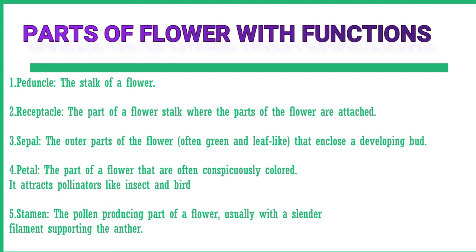Petal: the part of a flower that is often conspicuously colored. It attracts pollinators like insects and birds. Stamen: the pollen-producing part of a flower, usually with a slender filament supporting the anther. Anther: the part of the stamen where pollen is produced.